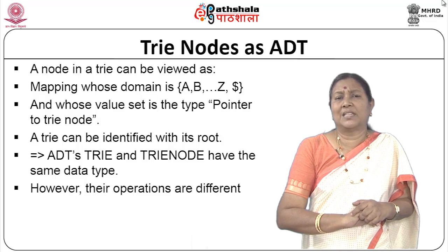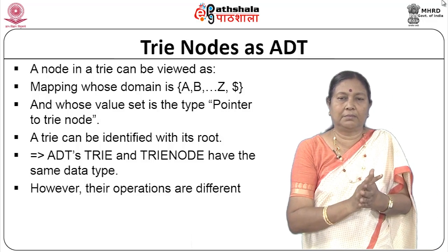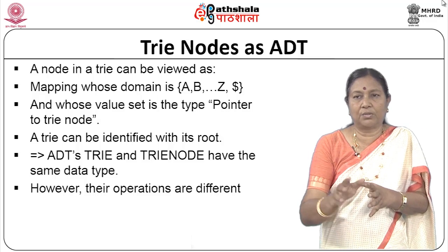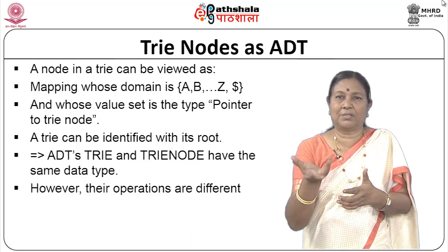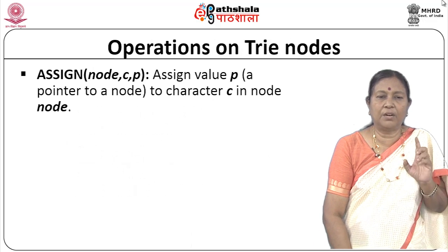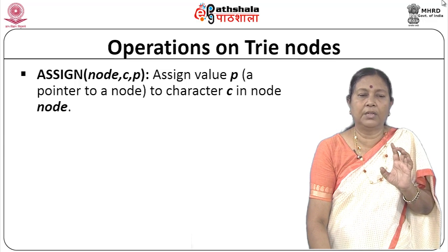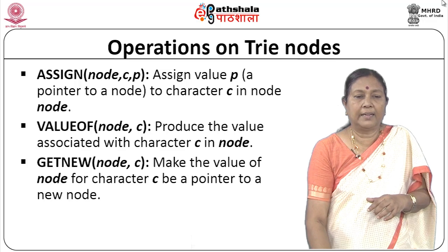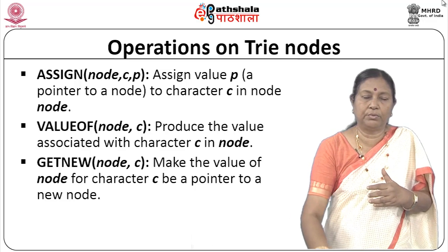Let us look at trie nodes as an ADT. A node in a trie can be viewed as a mapping whose domain is the set of characters A through Z plus dollar, and whose value set is a pointer to a trie node. Operations on trie nodes include: assign(node, C, P) — assign pointer P to character C in the node; value_of(node, C) — get the value associated with character C; and get_new_node — create a new node for a given character during construction.